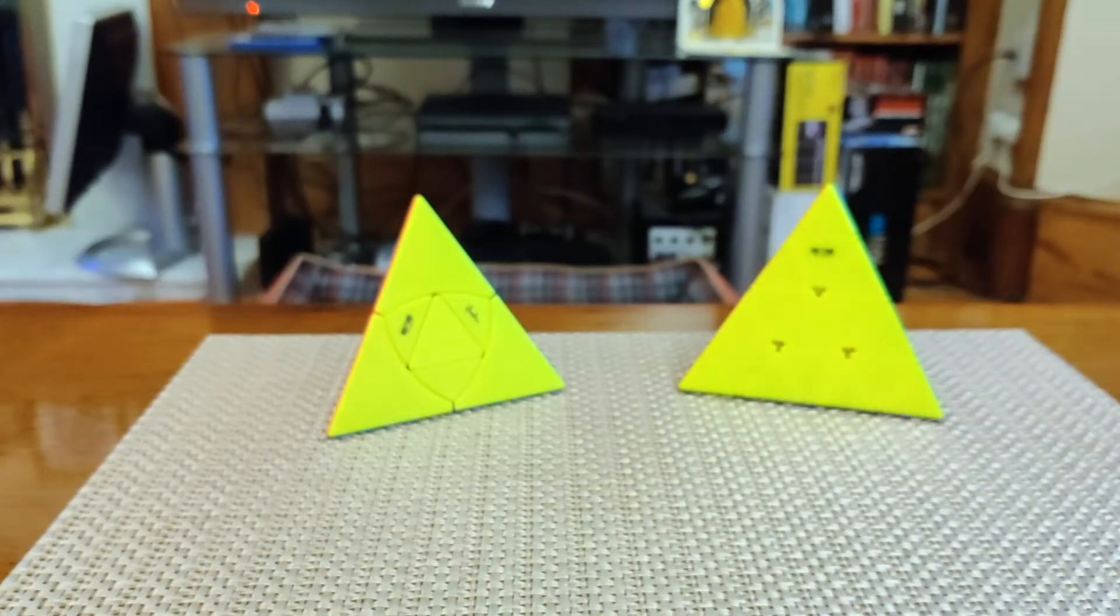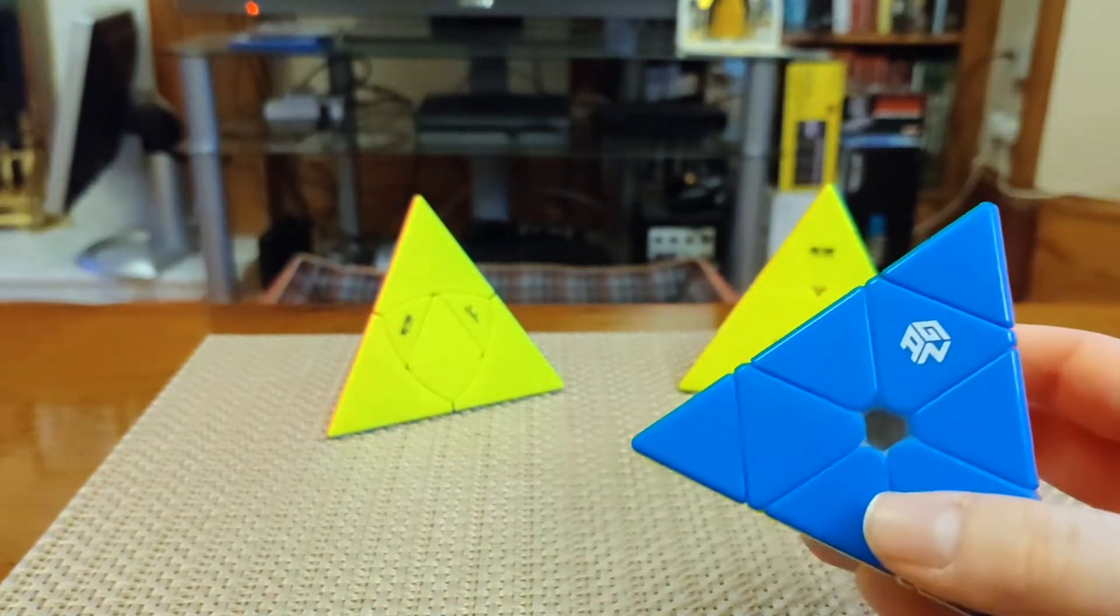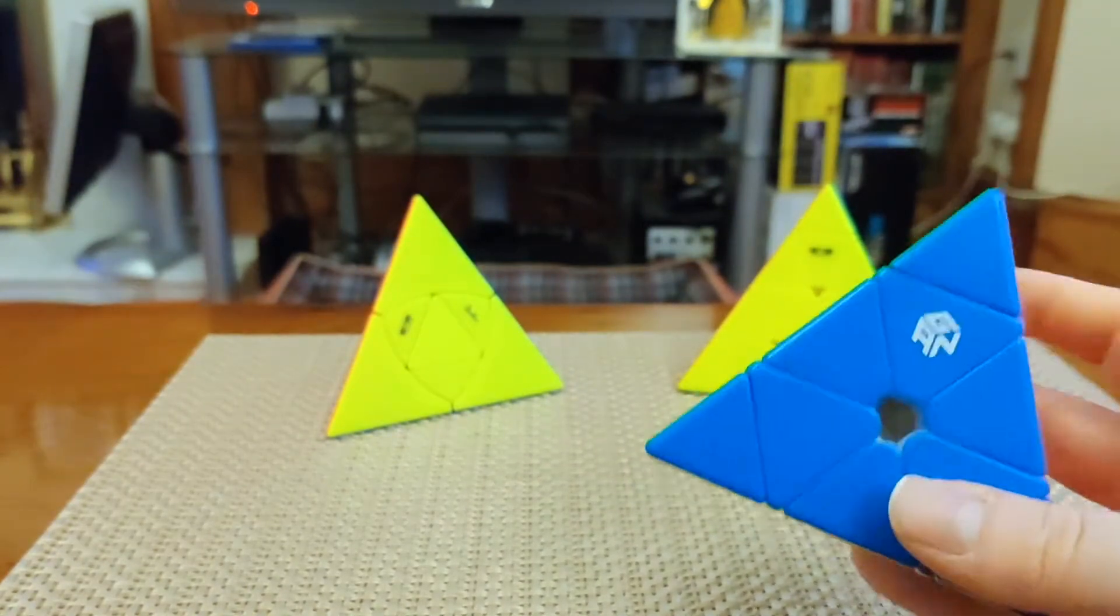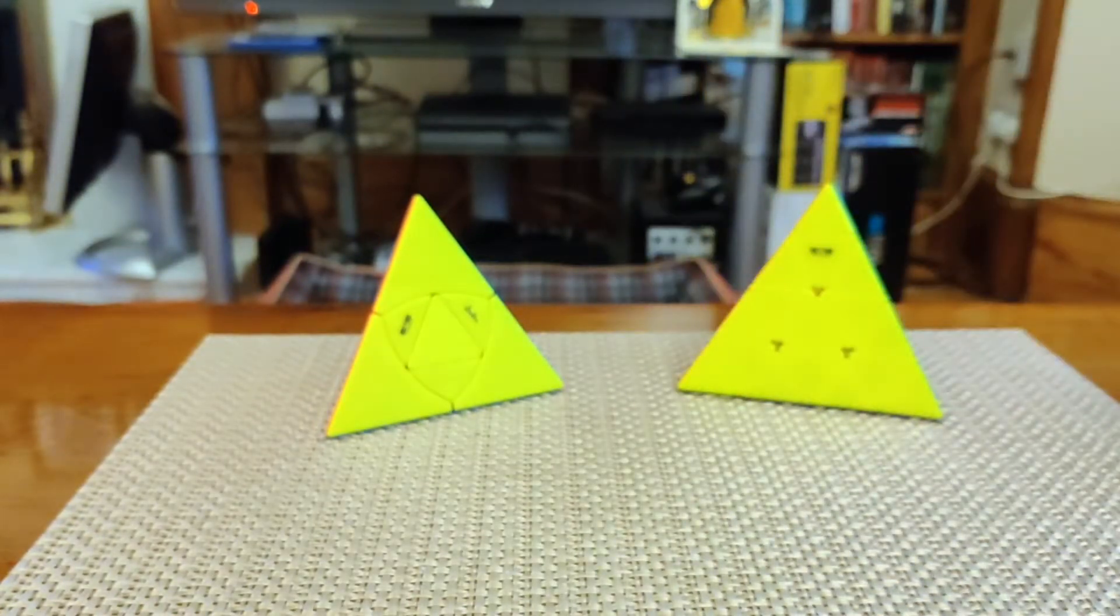I was tempted to include the Pyraminx in this video because you can get very cheap and cheerful, extremely good speed Pyraminxes with magnets these days, but probably you know that already. I am however going to break out my favorite Pyraminx speed puzzle, the Gan Pyraminx M, and use this as a point of comparison to show you what differs about these two pyramids.